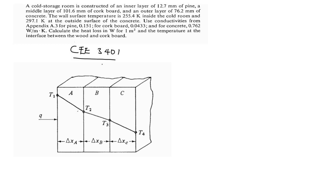The wall surface temperature is 255.4 Kelvin inside and 297.1 Kelvin at the outside surface of the concrete. Use the conductivities from Appendix A3 — given as: pine 0.151, corkboard 0.0433, and concrete 0.762 watt per meter Kelvin. Calculate the heat loss in watts per one meter square and the temperature at the interface between the wood and the corkboard.